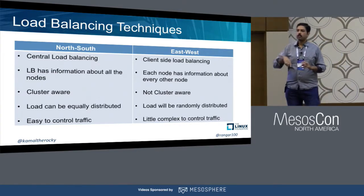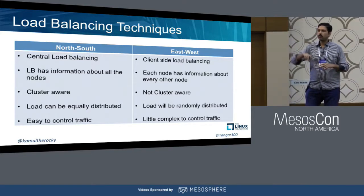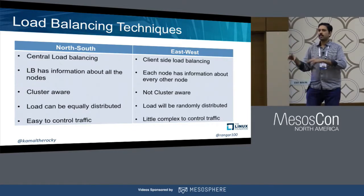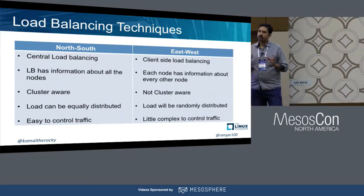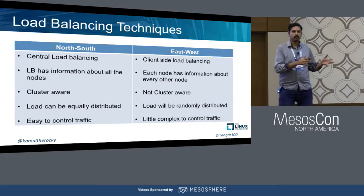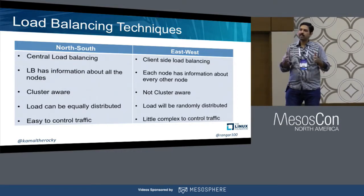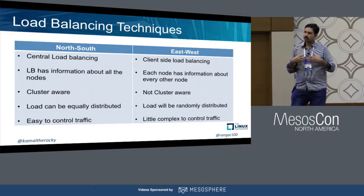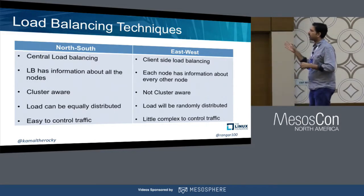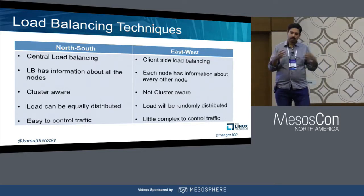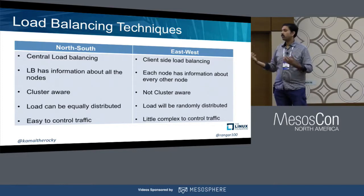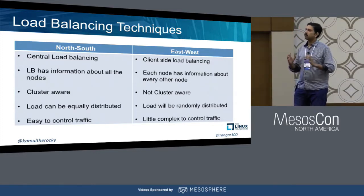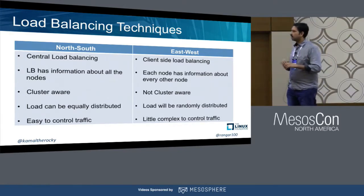In the east-west model, your services know about each other and there is no single hop. They automatically know which endpoint to connect to and client-side load balancing happens there. We wanted to figure out the pros and cons of each approach and map them to our use case to see which one will work. When we did that, these are the differences we found. Traditionally we were on north-south, and we wanted to see whether east-west would work for us, but there were certain things which led us to stay with north-south for now.